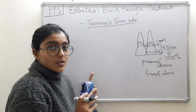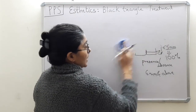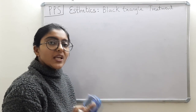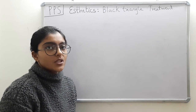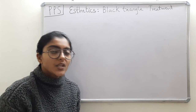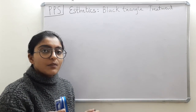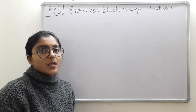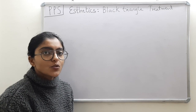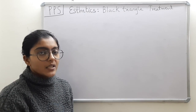Now that we are clear with the classification and this rule, we will discuss the treatment aspect. For treatment, we have non-surgical options and surgical options. Under non-surgical, we have options from all disciplines of dentistry. First, because it is a periodontal problem, the first option is non-surgical periodontal therapy — scaling, root planing, curettage, and sometimes repeated curettage, which can result in tissue formation and maybe papilla reconstruction. Not every time, but yes, this is one option.